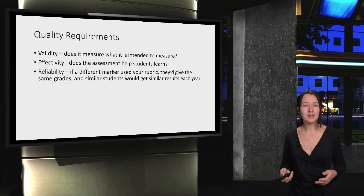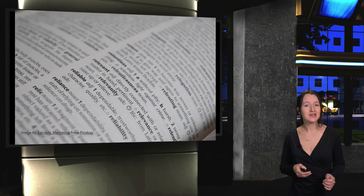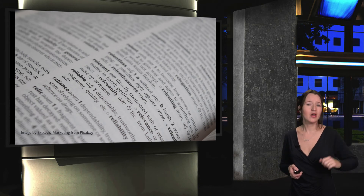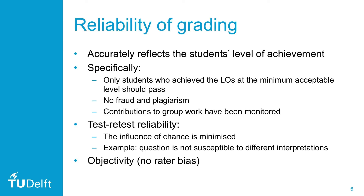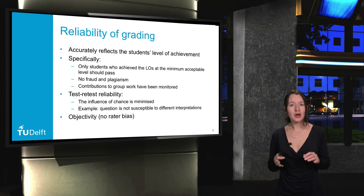Then we have reliability in both test taking and in grading. Similar students taking a similar test should have similar grades. And a student who scores 90% in all of their assignments shouldn't suddenly receive 40% on a test. This means that questions and assignments are clear and tests are comparable over the years — equally difficult and equally difficult on the same learning objectives. Moreover, the type of questions, whether open-ended or multiple choice, should not influence the grade.